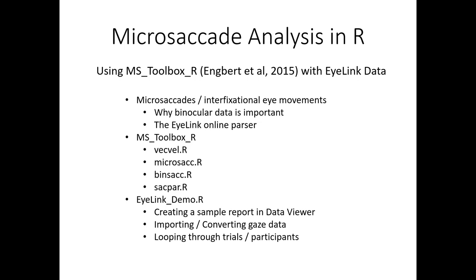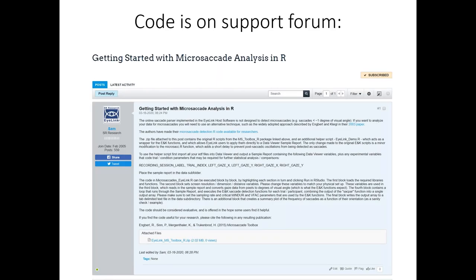I'll also talk a little bit about the iLink parser, how it works and why it doesn't detect microsaccades. Then I'll move on to the main body of the webinar where we're going to take quite a detailed look at the microsaccade toolbox for R, and in particular a number of the functions that it uses for microsaccade detection. I'll explain how they work the best I can. And finally I'll take a look at a wrapper we wrote which basically allows you to very easily use the basic MS Toolbox functions on data collected with iLinks. If people are interested in getting into microsaccade detection, you can download the iLink version of the MS Toolbox for R from our support forum.